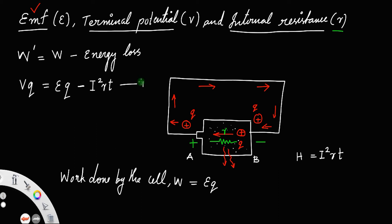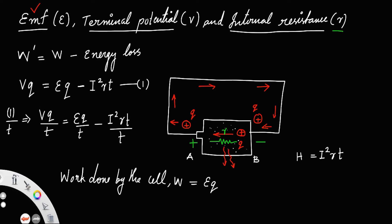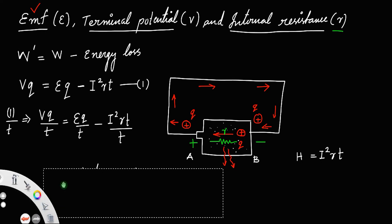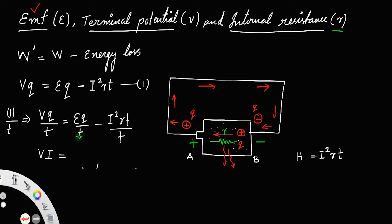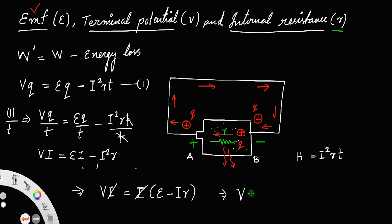Let us call the earlier equation equation number 1. If you divide equation 1 by time T, you get W dash by T equals EQ by T minus I²RT by T. Since Q divided by T equals I (current), this becomes: V·I equals E·I minus I²R. Taking I outside on the right side: V·I equals I(E minus IR). Dividing both sides by I, we get V equals E minus IR, where V is called the terminal potential.